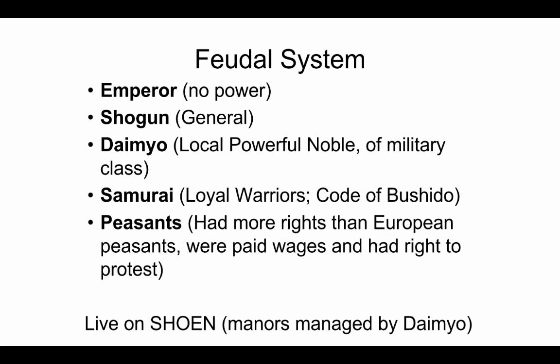The key point about the samurai we'll learn more about in another context, but the peasants of Japan have more rights than European peasants. Since there was no real slave class before in Japan, free people simply shifted to different roles within a new economic and political system. Peasants were paid wages, had the right to protest and strike, and if they didn't like the daimyo they were working for, they could just up and leave to a different place. They were not tied to the land or to the daimyo — far more freedom.